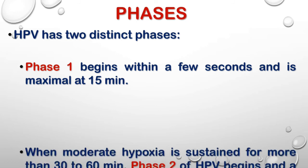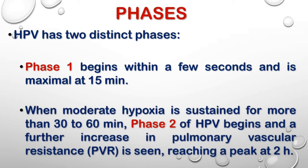When moderate hypoxia is sustained for more than 30 to 60 minutes, Phase 2 of HPV begins, and a further increase in pulmonary vascular resistance is seen, reaching a peak at 2 hours.